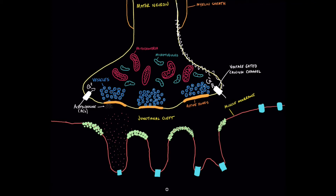When the depolarization from the nerve reaches these calcium channels, there is a huge influx of calcium into the end of the nerve terminal. That calcium is super important — it binds to the vesicles and promotes them to migrate completely to the membrane. When these vesicles migrate to the membrane at the active zones, they fuse with the membrane in a process called exocytosis, which we'll get into later, and they release all of this acetylcholine into the junctional cleft.